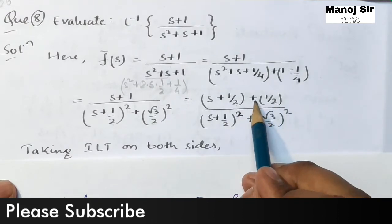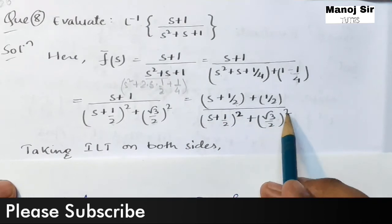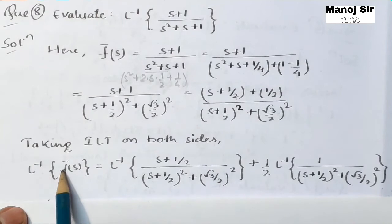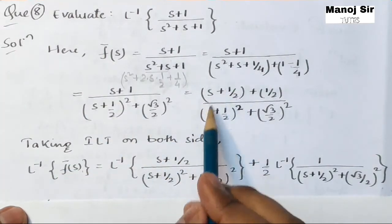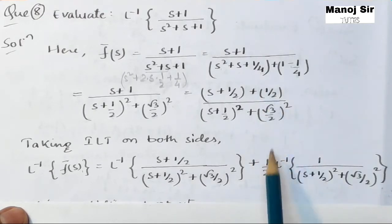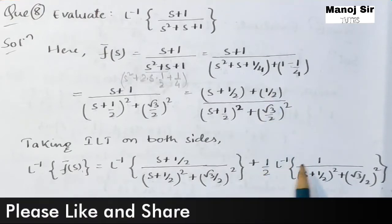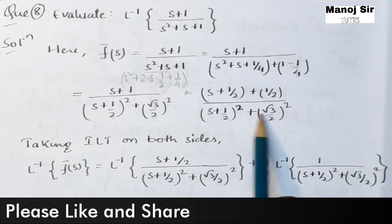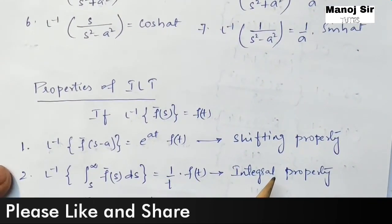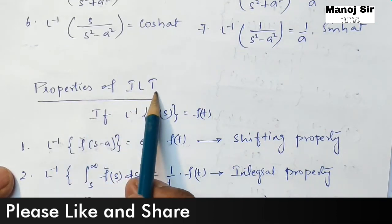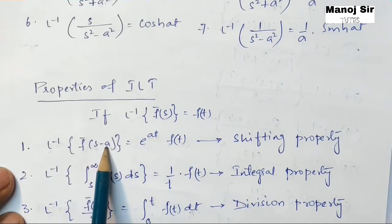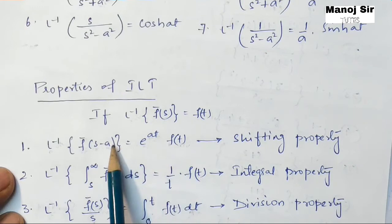We separate the expression into two terms: (s + 1/2) upon [(s + 1/2)² + (√3/2)²] and (1/2) upon [(s + 1/2)² + (√3/2)²]. Now we take the inverse Laplace transform of both sides. From the properties of inverse Laplace transform, the shifting property states: if inverse Laplace transform of F̄(s) = f(t), then inverse Laplace transform of F̄(s − a) = e^(at)·f(t).